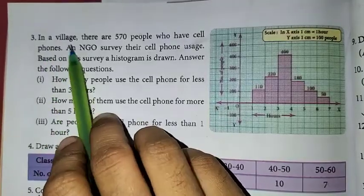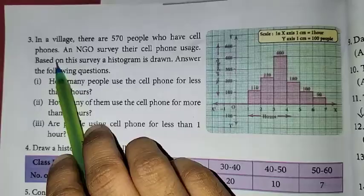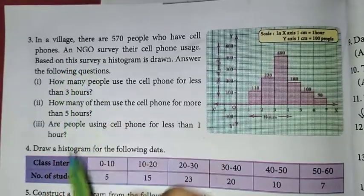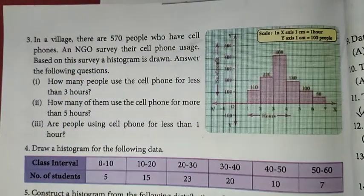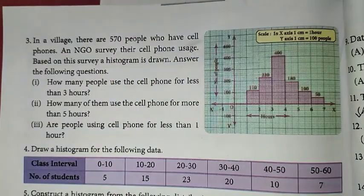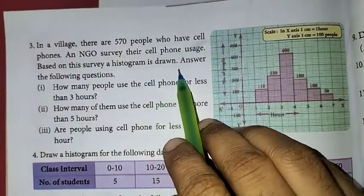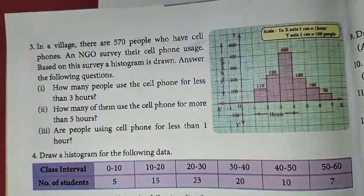In the problem, in a village, there are 570 people who have cell phones. An NGO survey their cell phone usage. Based on this survey, a histogram is drawn. Answer the following questions. That is a histogram.